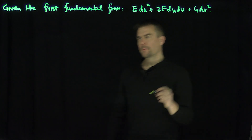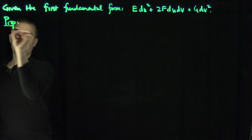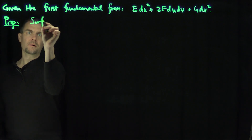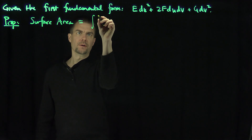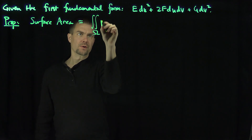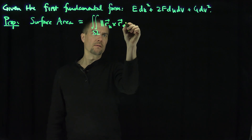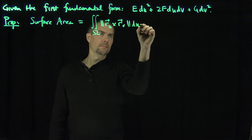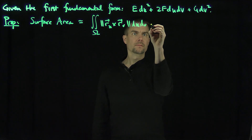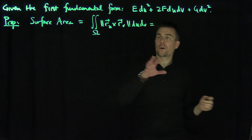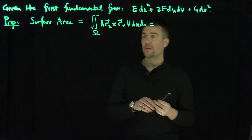We claim — this is the Helling theorem proposition — the surface area, which we define to be the double integral over the parameterization region of |r_u cross r_v| du dv, is equal to an expression in terms of the first fundamental form. Let's do a derivation to figure that out.